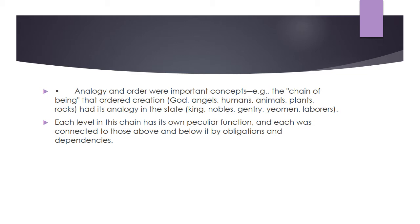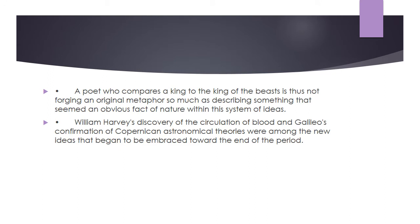Analogy and order were important concepts. For example, the chain of being that ordered creation — God, angels, humans, animals, plants, rocks — had its analogy in the state: king, nobles, gentry, yeoman, labourers. Each level in this chain had its own peculiar function, and each was connected to those above and below it by obligations and dependencies. A poet who compares a king to the king of the beasts is thus not forging an original metaphor so much as describing an obvious fact of nature. William Harvey's discovery of the circulation of blood and Galileo's confirmation of Copernican astronomical theories were among the new ideas that began to be embraced toward the end of the period.